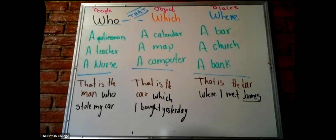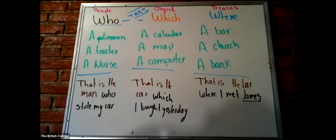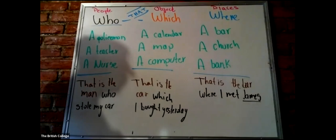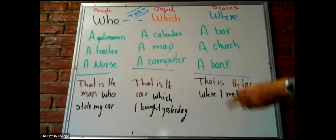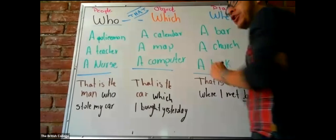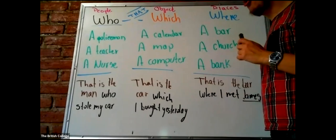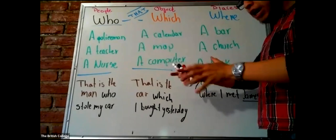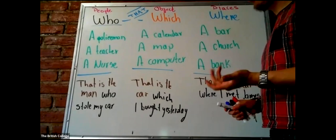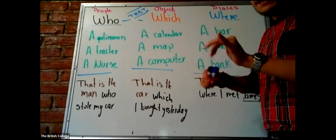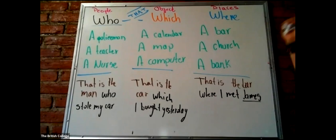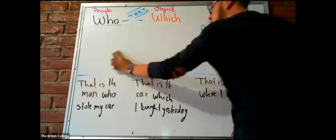Now, vamos a seguir, chicos. Vamos a ver un uso extra de estos tres. ¿Cuándo puedo usar who, which, and where? Lo importante, chicos, recuerden que el that puede reemplazar tanto a who como which. O sea, que yo puedo decir, a map is an object which, or a map is an object that I use to check where is something. A computer is an object which, or is an object that I use to make process or to make things easier or faster.